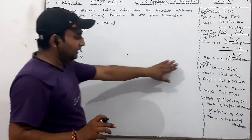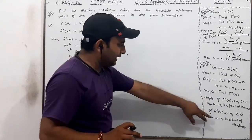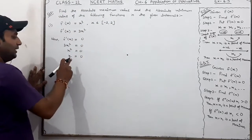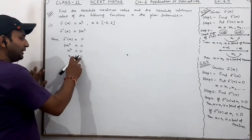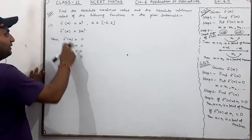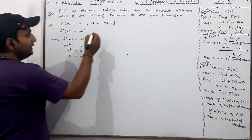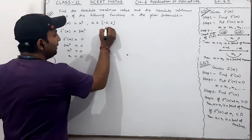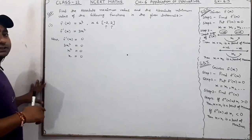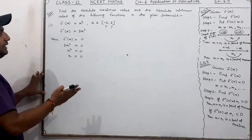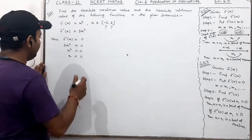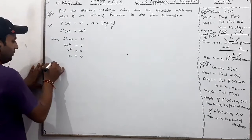Now, we don't need to check the second derivative. We have a direct method: we check the function values at the critical point and at the endpoints of the interval. The endpoints are minus two and two. We check the function values, and then the maximum value will be the absolute maximum value and the minimum value will be the absolute minimum value.